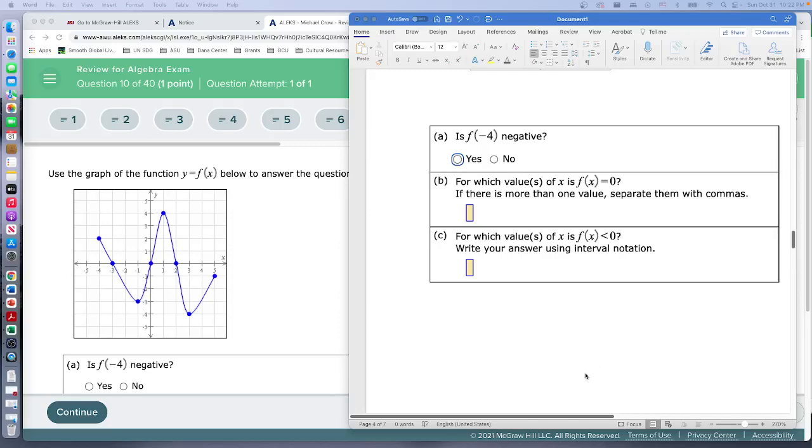Question 10, we're also looking at a graph and we're going to use this graph to answer the questions below, which I've moved over to the side here. So is f of negative 4 negative? Now of course negative 4 is negative, but this is asking is the output value negative. So we go to negative 4...